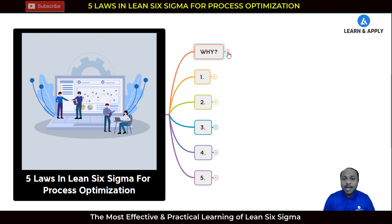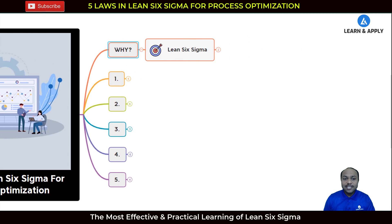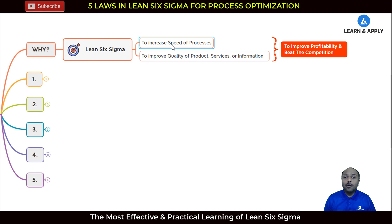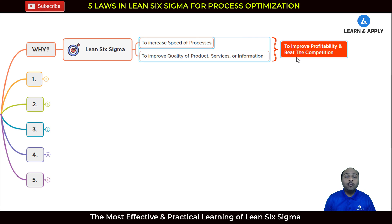Let's start with why we need to learn this. Lean Six Sigma is an approach that is very important for organizations in two ways: if you want to increase the speed of processes by reducing waste, or if you want to improve the quality of your product, services, or information by initiating projects. In other words, if you want to improve profitability and beat the competition, you must execute Lean Six Sigma in your organization — whether you are an organization, individual, or team.